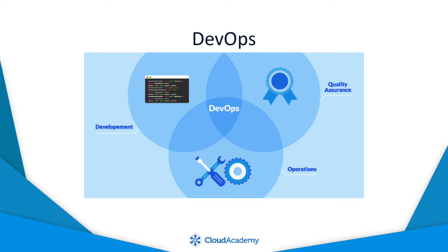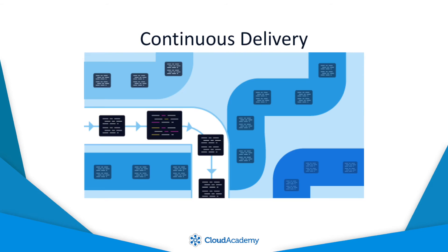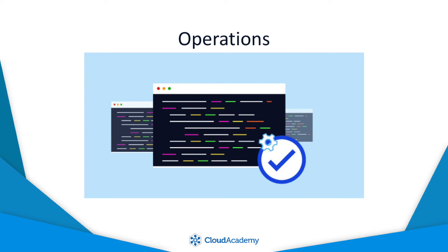Throughout these courses, we'll cover what DevOps is. We'll talk about continuous integration as a means of testing code on each commit. We'll move on to continuous delivery and talk about methods of getting software deployed into production on a regular basis. And we'll wrap up with a discussion of some of the challenges faced by operations engineers.